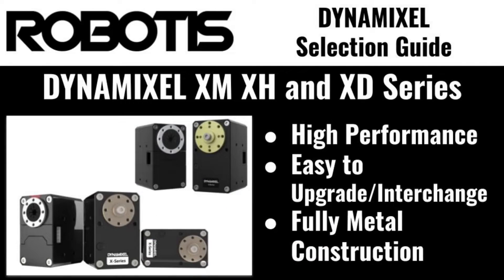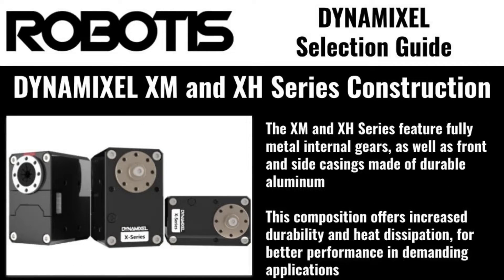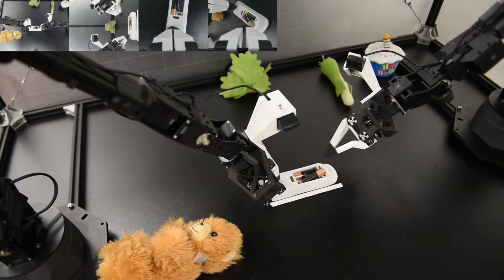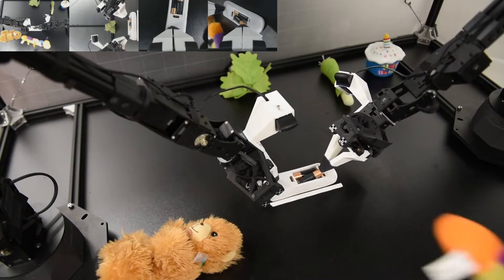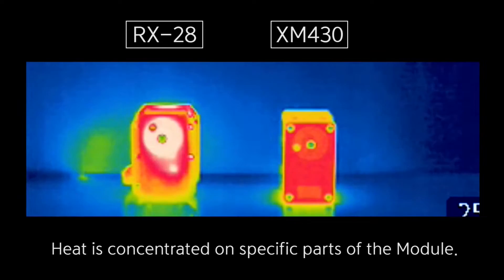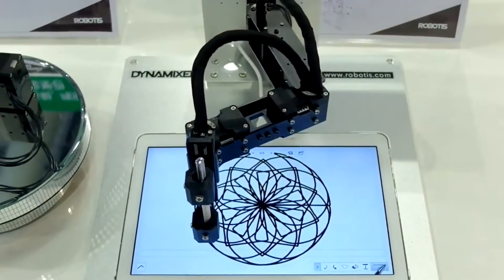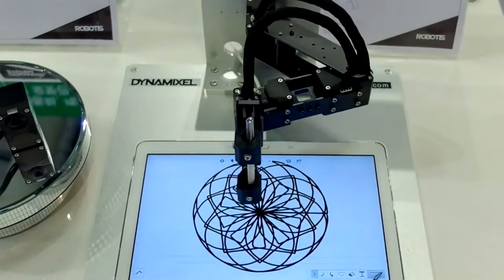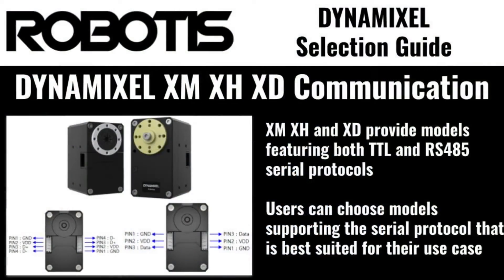The XM, XH, and XD series servos are the core of the Dynamixel family, providing the best mix of high performance and affordability, with different series allowing users to choose the performance characteristics most important to them. XM, XH, and XD servos feature aluminum casing on the front and sides of the unit, providing increased durability as well as heat dissipation for extended operating times and overall lifetime. XM series servos are well suited to medium-duty applications providing great performance and flexibility.